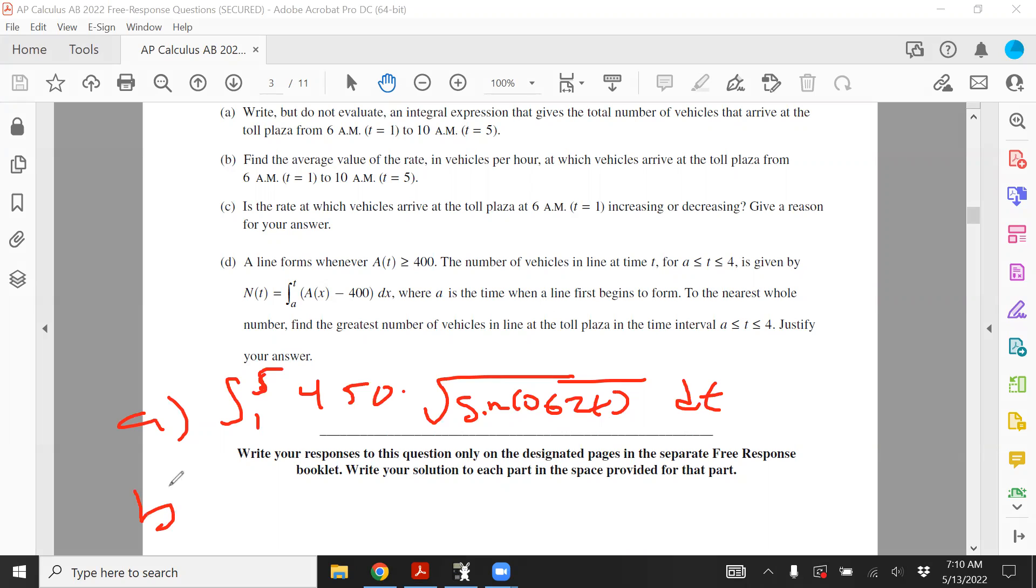Then part B. Very similar to part A. They're asking for the average value of the rate. So remember average value is not an average rate of change, it's average value of the function itself, the rate function. So you're just going to do 1 over 5 minus 1, and then times the integral. So that's how you find average value. And average value of the rate, so don't overthink it. The function itself is a rate. You want the average value of it. So you always multiply by 1 over B minus A.